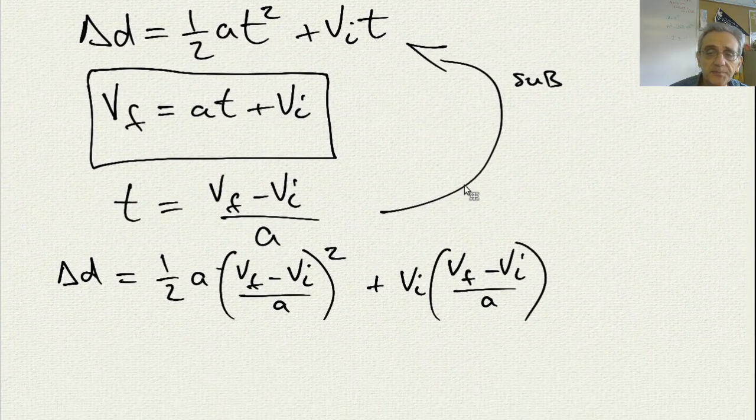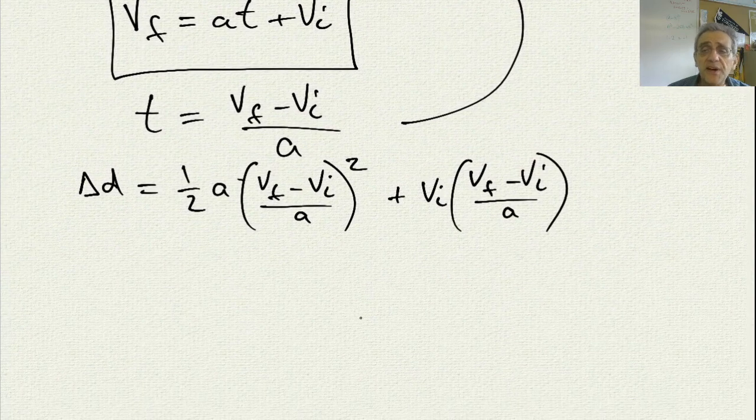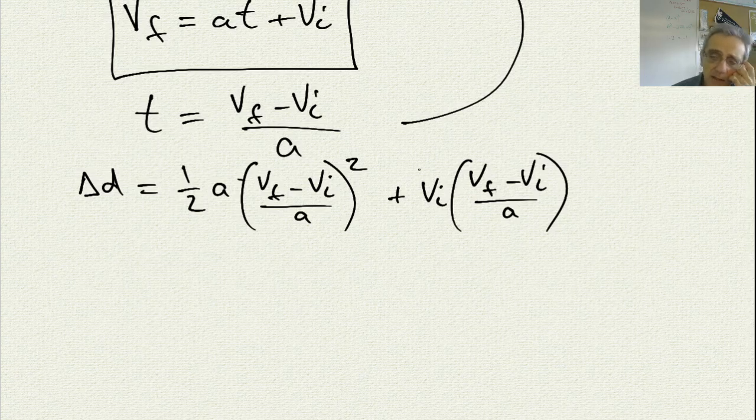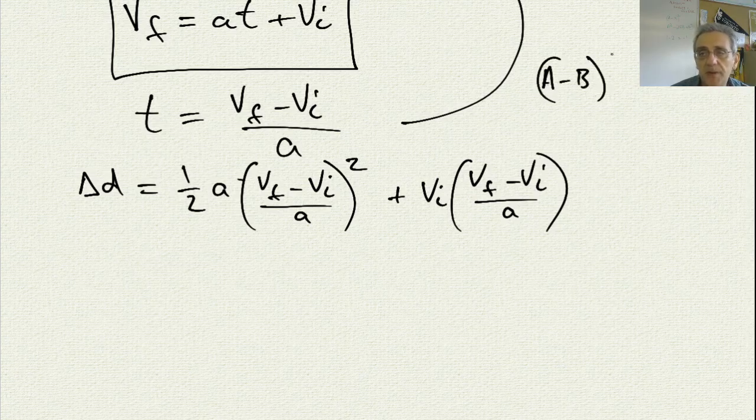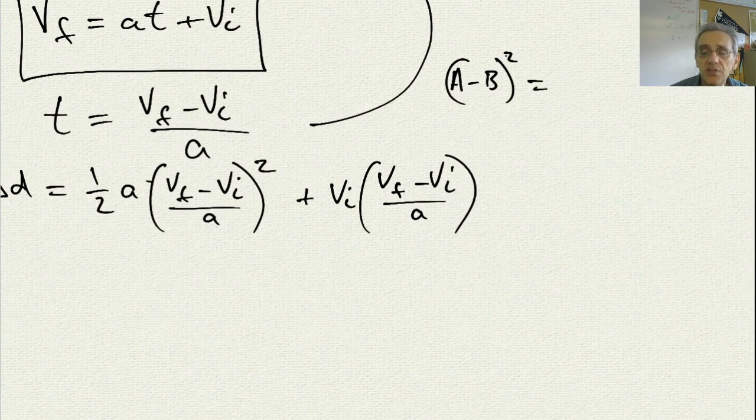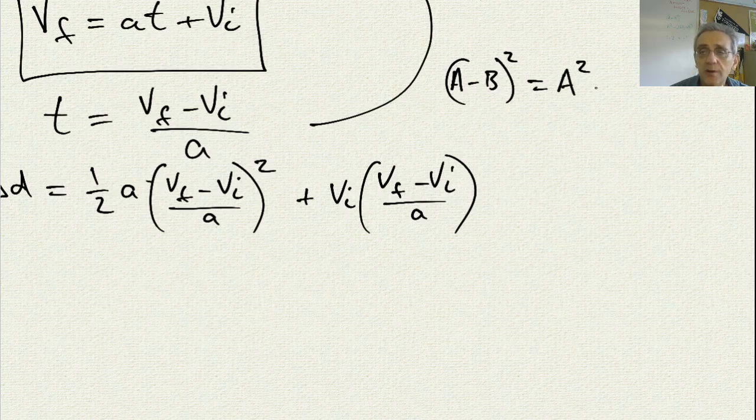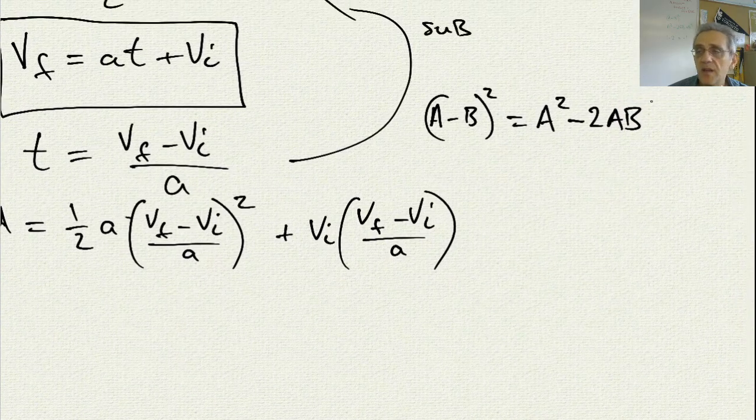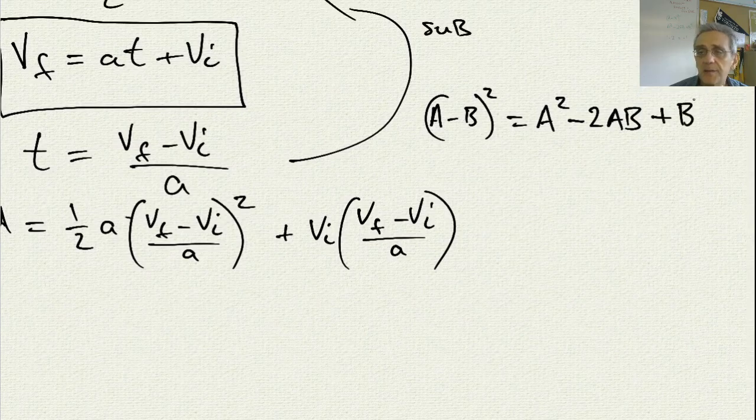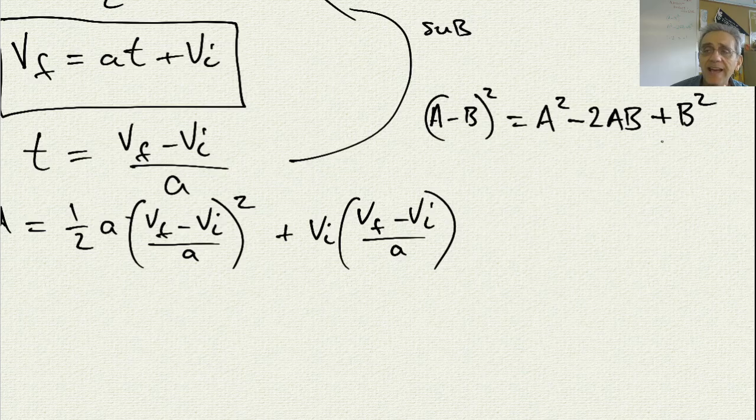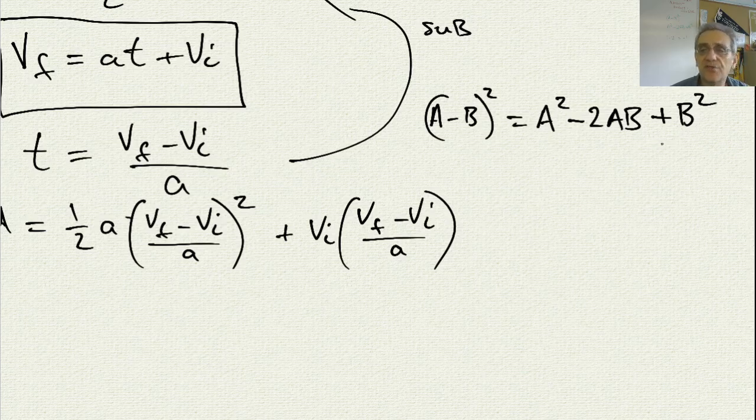And so if I now try to simplify this equation, I'm going to need a little bit of algebra math help here. And if you remember, a minus b squared is equal to a squared minus 2ab plus b squared. So that is like something you learn. I think it's called FOIL. But most students that have taken grade 9 or 10 math will remember that.